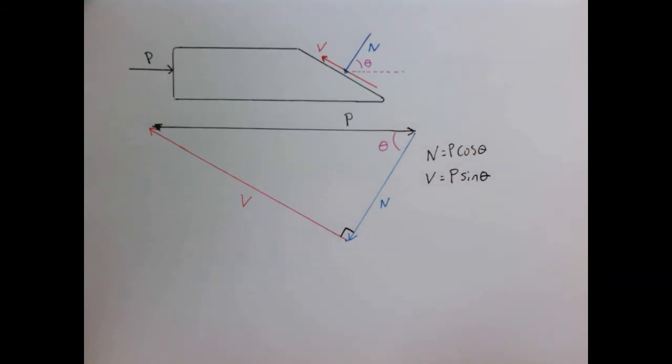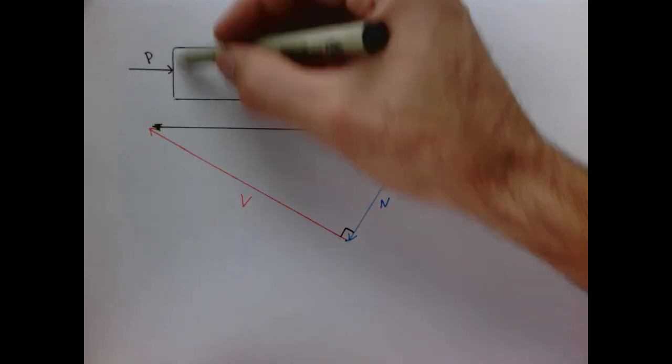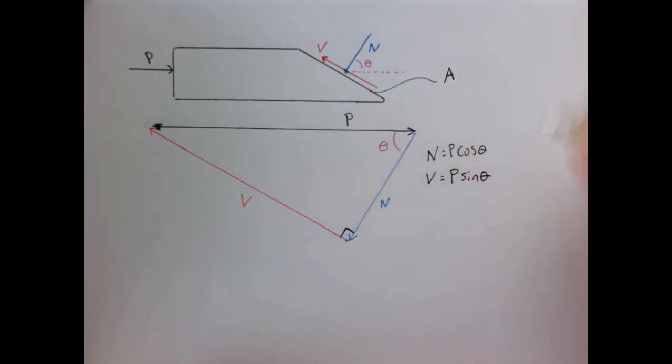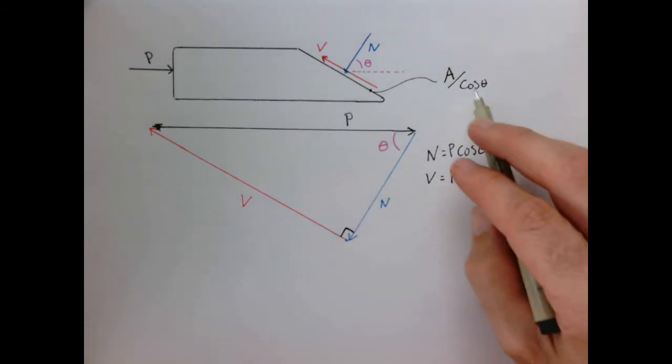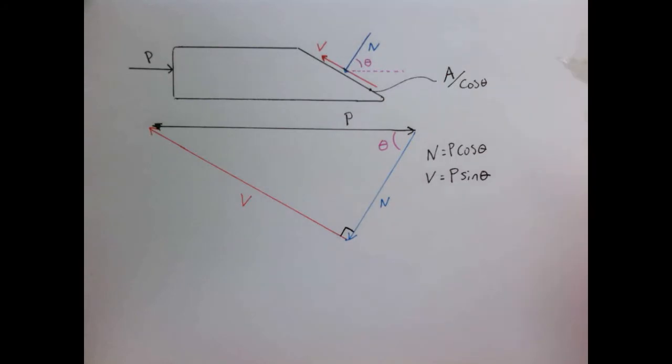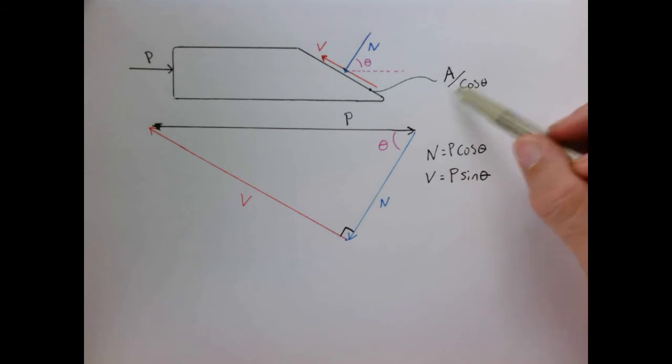So that's the normal force. Now we want to get the stress. The area of this surface here is given as the area of the column itself divided by the cosine of theta. You can kind of work this out and make sure that you believe me. When the cosine of zero is one, we return the right area. And at 90 degrees, that area is going to get larger and larger.